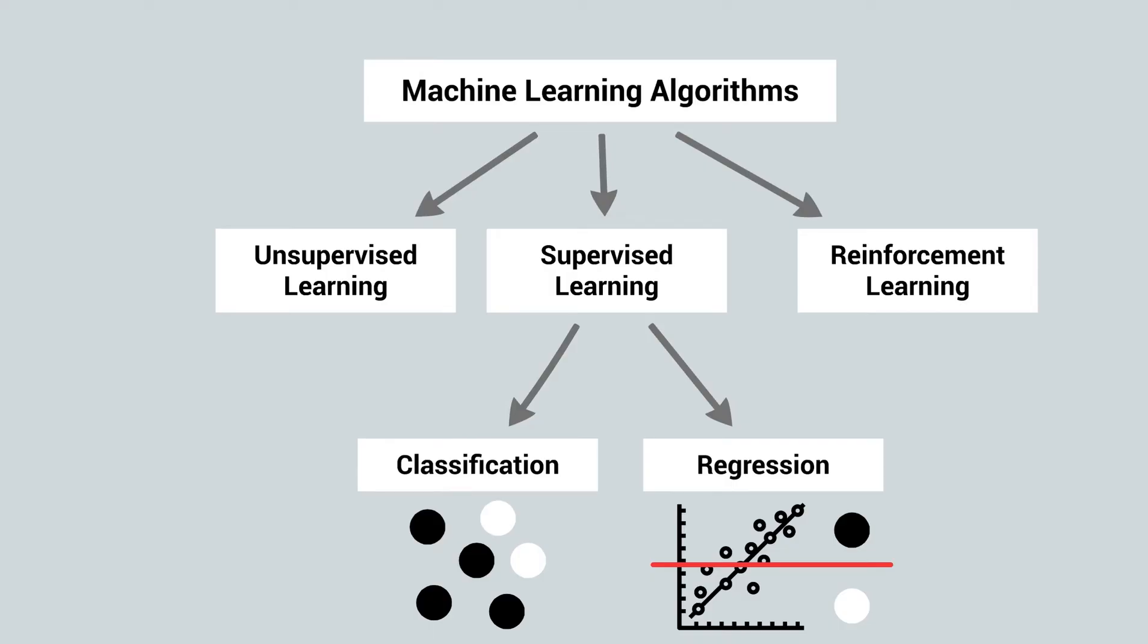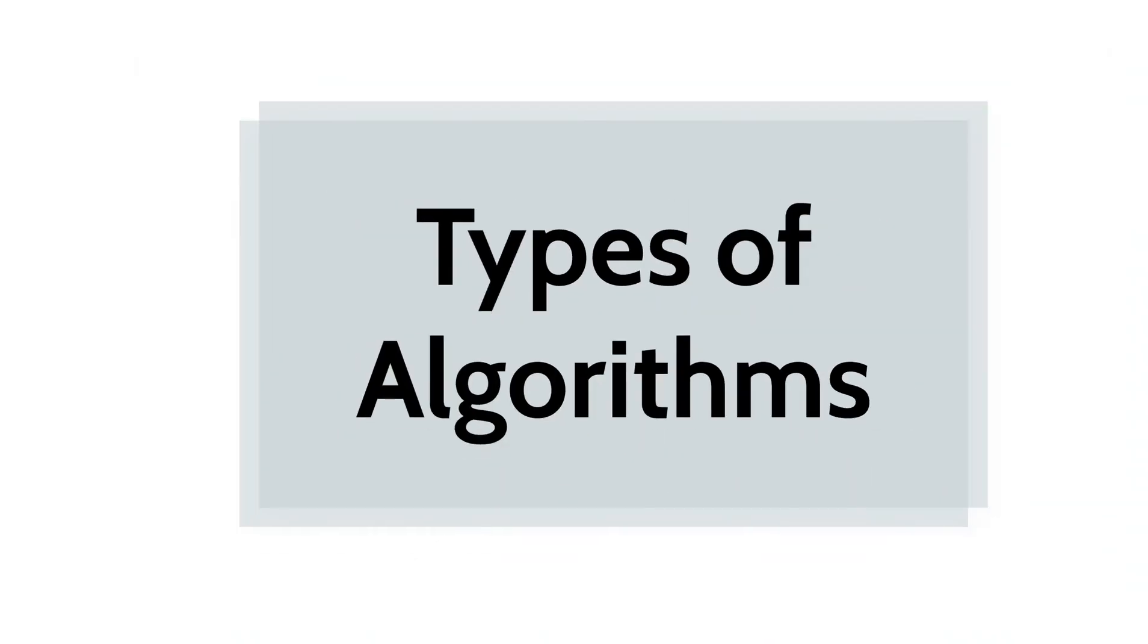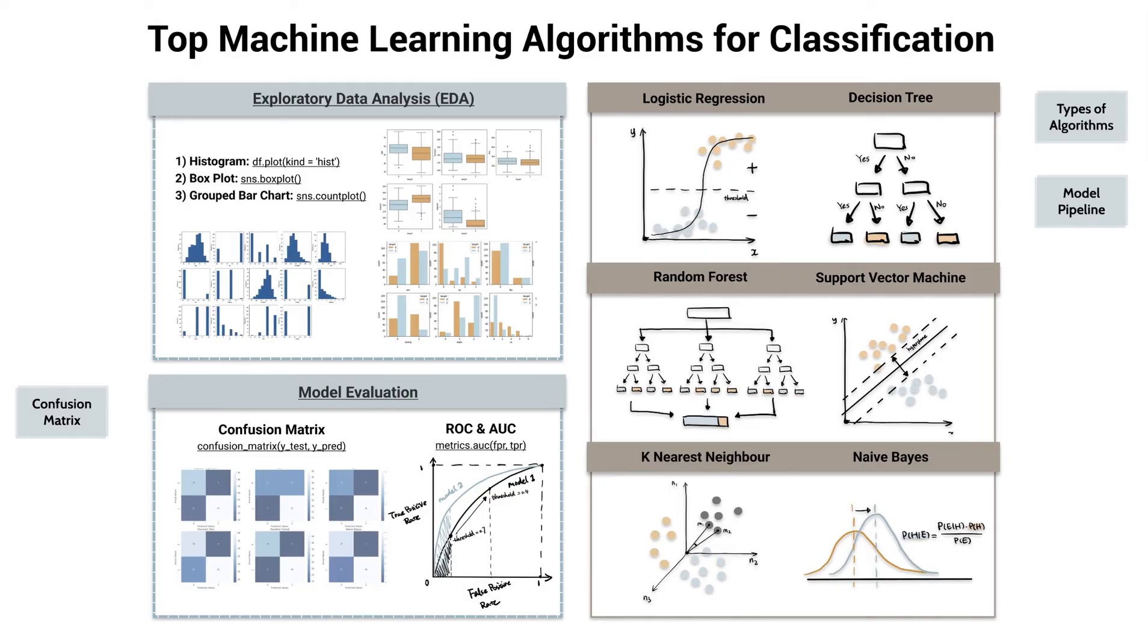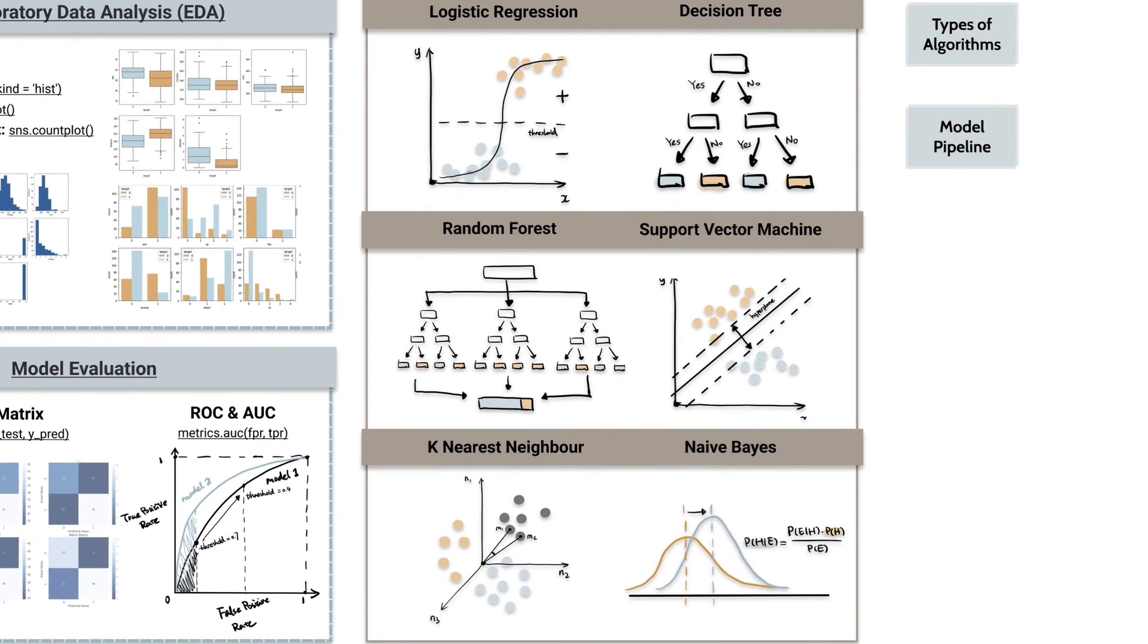In this video we will discuss top six machine learning algorithms for classification problems including logistic regression, decision tree, random forest, support vector machine, k-nearest neighbor and naive Bayes. Check out my website in the description if you want detailed guide and code snippet for these algorithms.